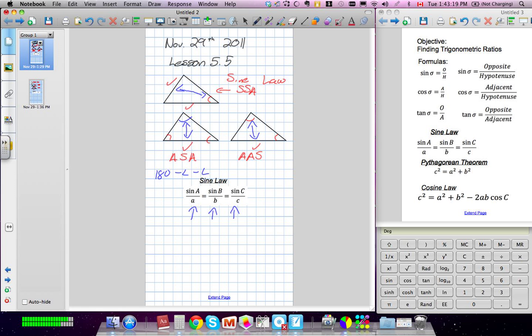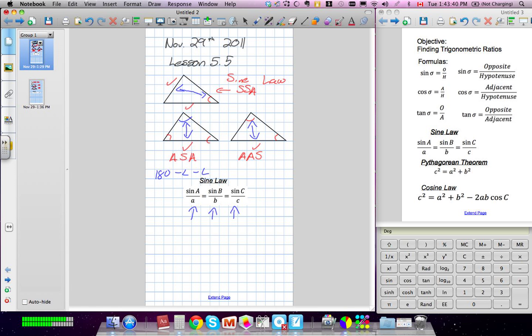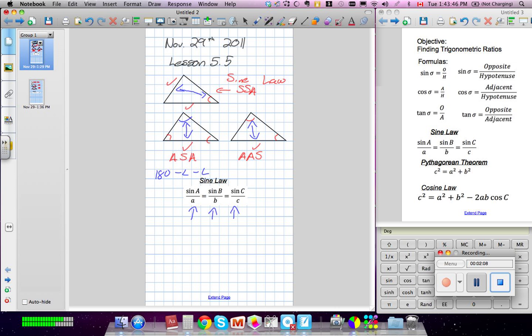The cosine law: if you have all the sides, you can solve for an angle. If you don't have any of the ratios, I don't have an opposite side and angle, you would use cosine law. So essentially, always check for sine law first.